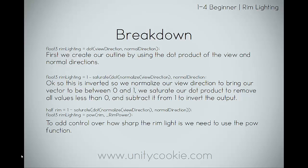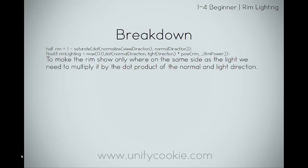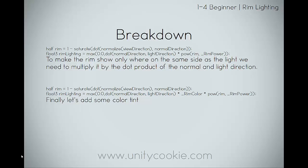To add control over how sharp the rim lighting is, we use the power function, which takes the first value to the power of the second — as discussed in the earlier lesson on specular lighting. To make the rim only show where we're on the same side as the light, we multiply it by the dot product of the normal and light direction. This dot product of the normal and light is just our Lambert shading model.